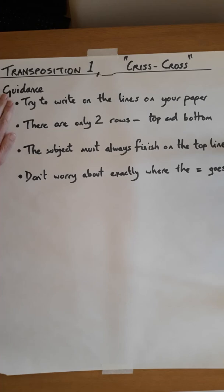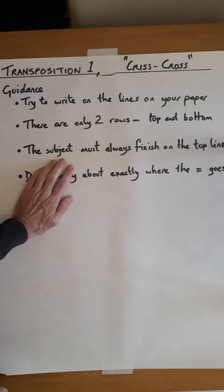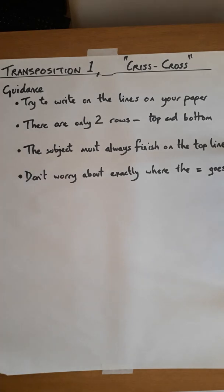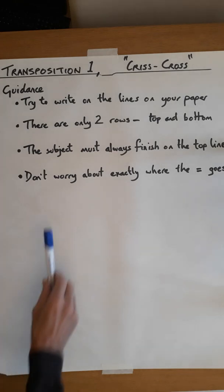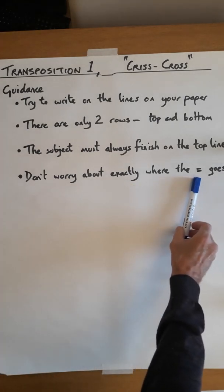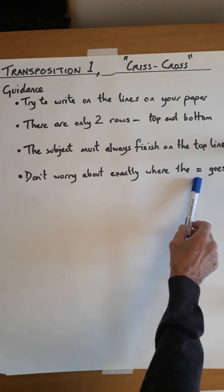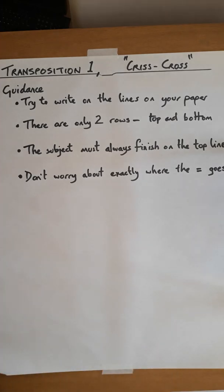I've tried to give some guidance. Try to write by using the lines on your paper as a guide. There are only two rows when we write down a formula. If it ends up as a fraction, we end up with a top line and a bottom line. The subject, the thing that we are trying to find, must always be on the top line by the time you get to the end of your transposition. And don't get hung up on the position of the equal sign.